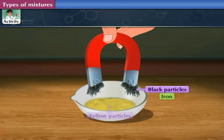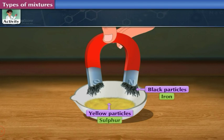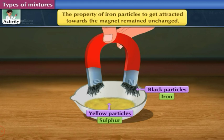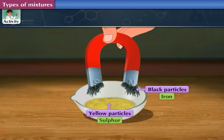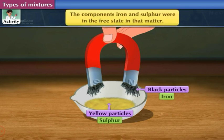The property of iron particles to get attracted towards the magnet remained unchanged. This means that the components iron and sulfur were in the free state in that matter.